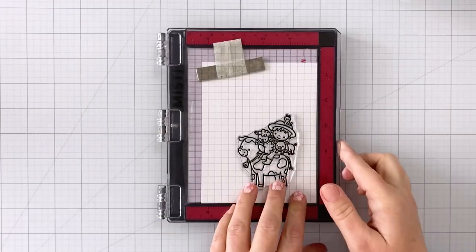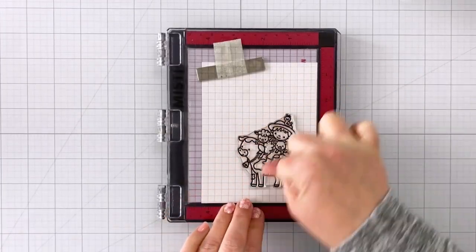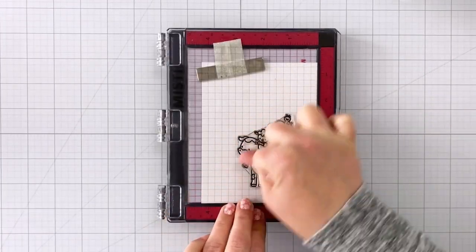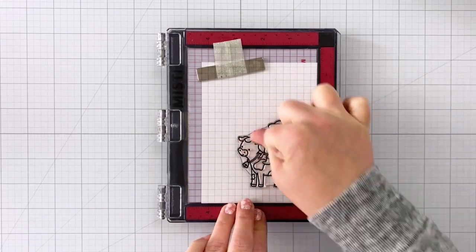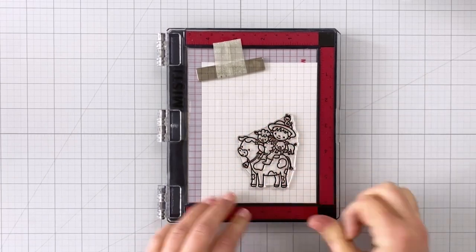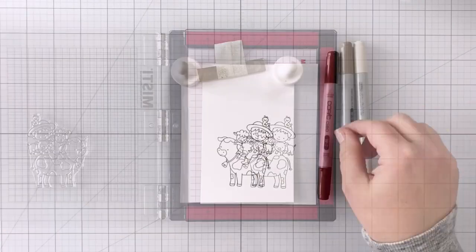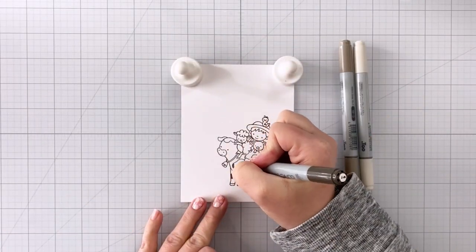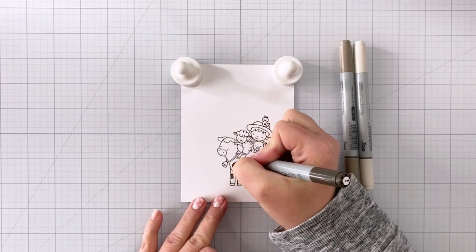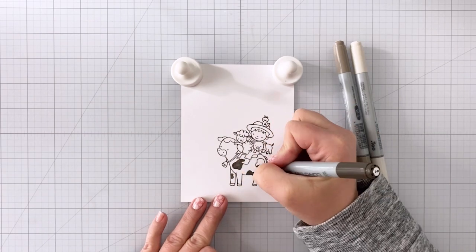I've stamped out my sentiment there. And then separately, I'm stamping out the cow with the little farmer boy and all of the animals. This is actually going to be sort of my top layer of my card because I'm going to be popping this up once I get it all colored and die cut.